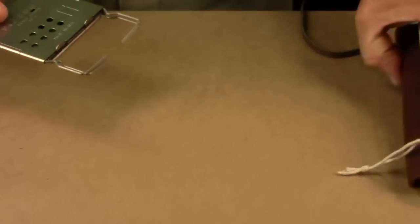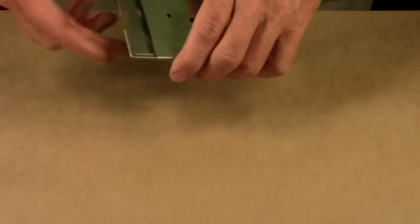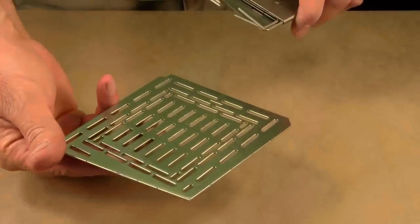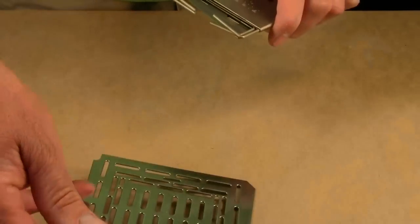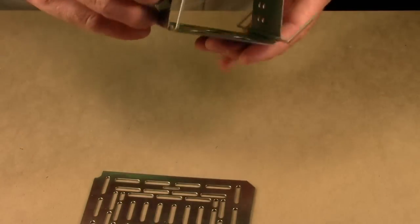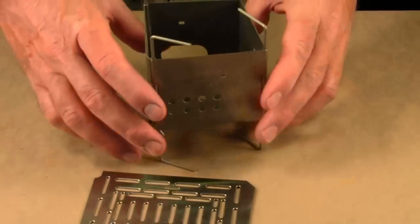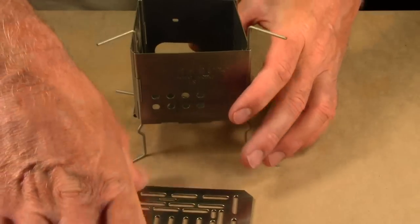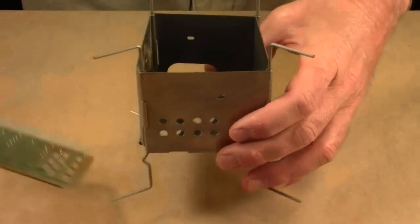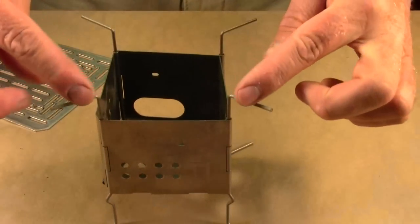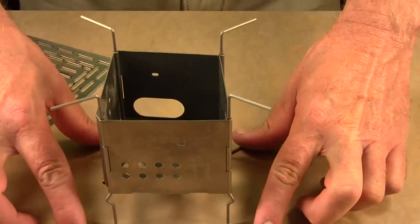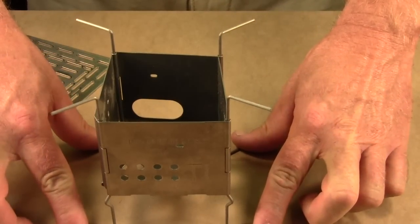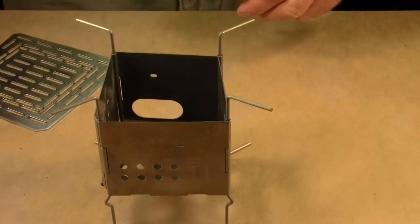Now, another accessory that people are using with the Nano is actually something that was made for our larger stove, which is this adjustable fire grate. Now, people are using that as a grill for the Nano. And the way that that works best is with the Nano set up with its legs completely out so you have a nice big footprint.